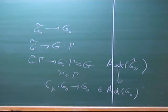The identity component is normal in the whole group. I can see how these other components act on the identity component as automorphisms. It may not be inner, because gamma lies in a different component — it may not be conjugation by something in G-naught, but it certainly is some automorphism. And can I lift this into an automorphism of the covering group? It may not be the case. So that's a tricky question: if I have a disconnected group, in what sense does covering make sense and how do I lift things?